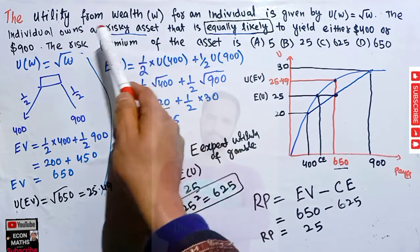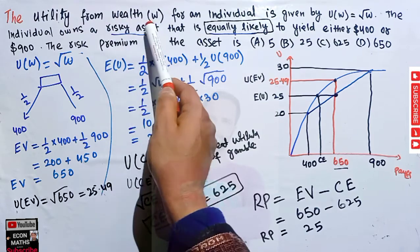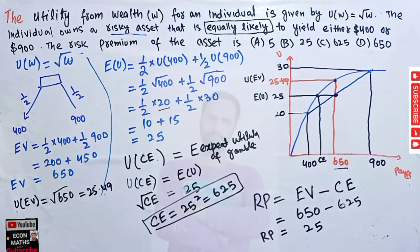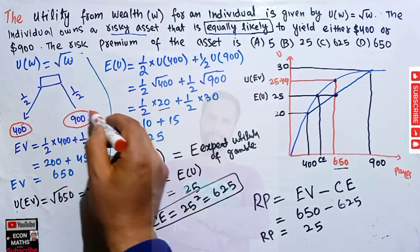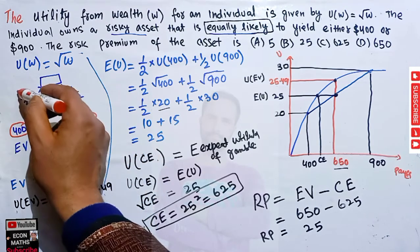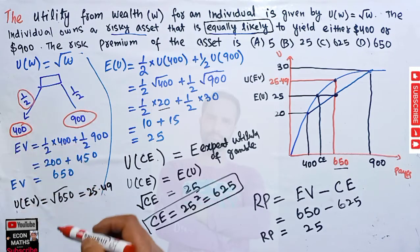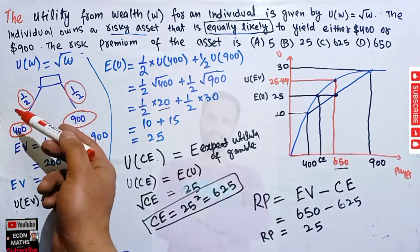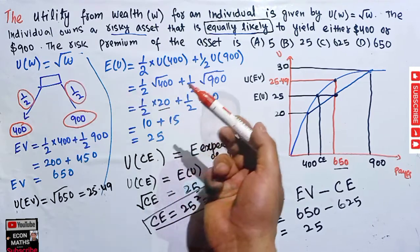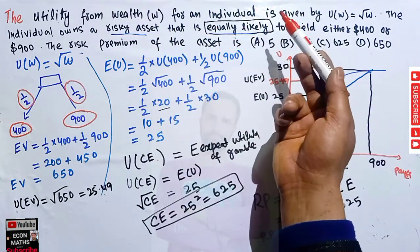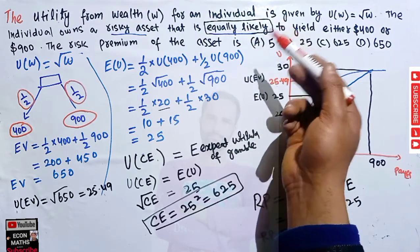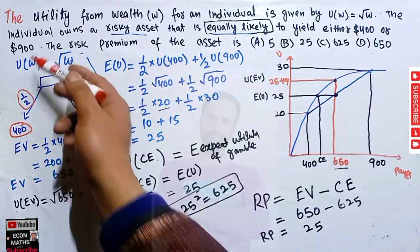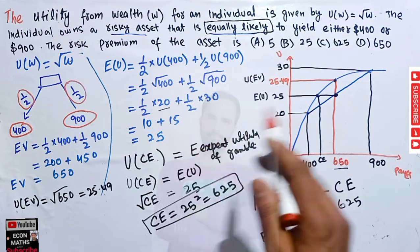This person has a risky asset that is equally likely to yield either 400 dollars or 900 dollars. The probability of getting 400 dollars is one-half — that means a 50% chance — and a 50% chance of getting 900 dollars. We get the probabilities of one-half and one-half because both outcomes are equally likely, meaning each outcome has the same probability of occurring.